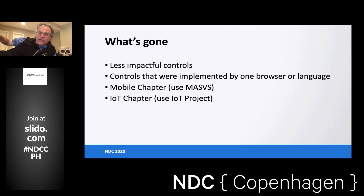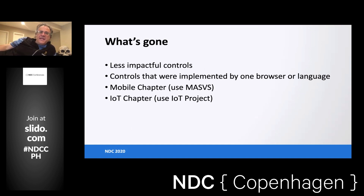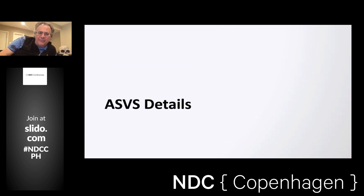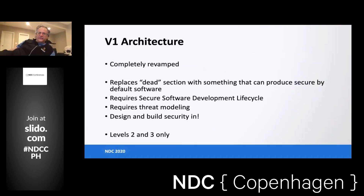What's gone: the mobile chapter is removed. Mobile has its own standard, the mobile ASVS. The IoT chapter was pushed to the appendix. Any defense that was one-browser or one-language only, we got rid of it. And things that weren't that important or were debatable, we got rid of those too. We're cleaning house.